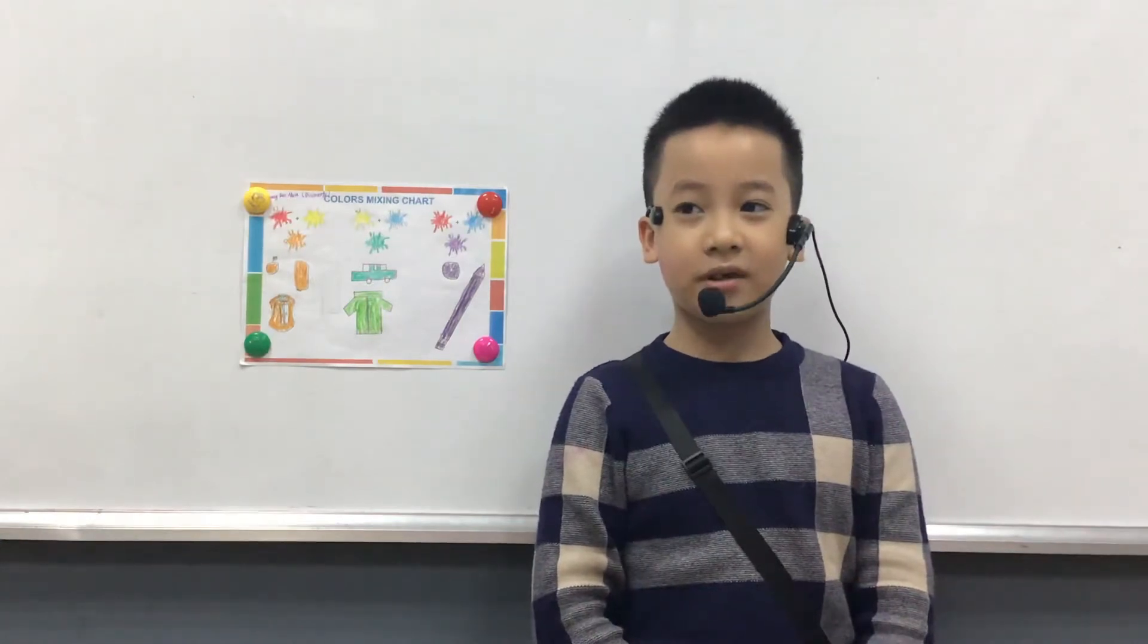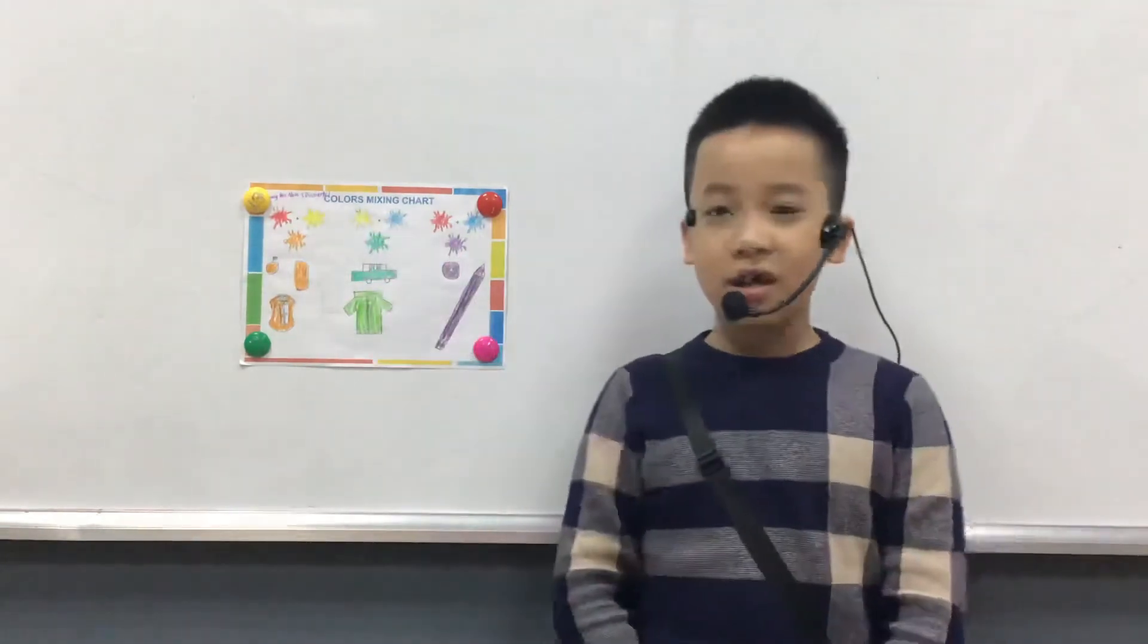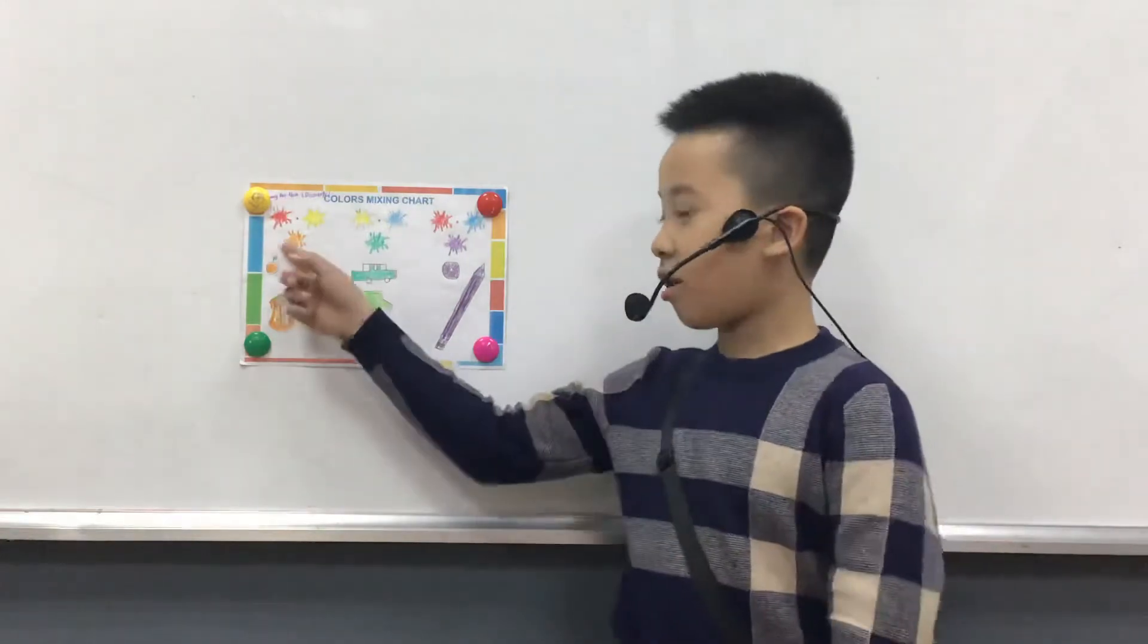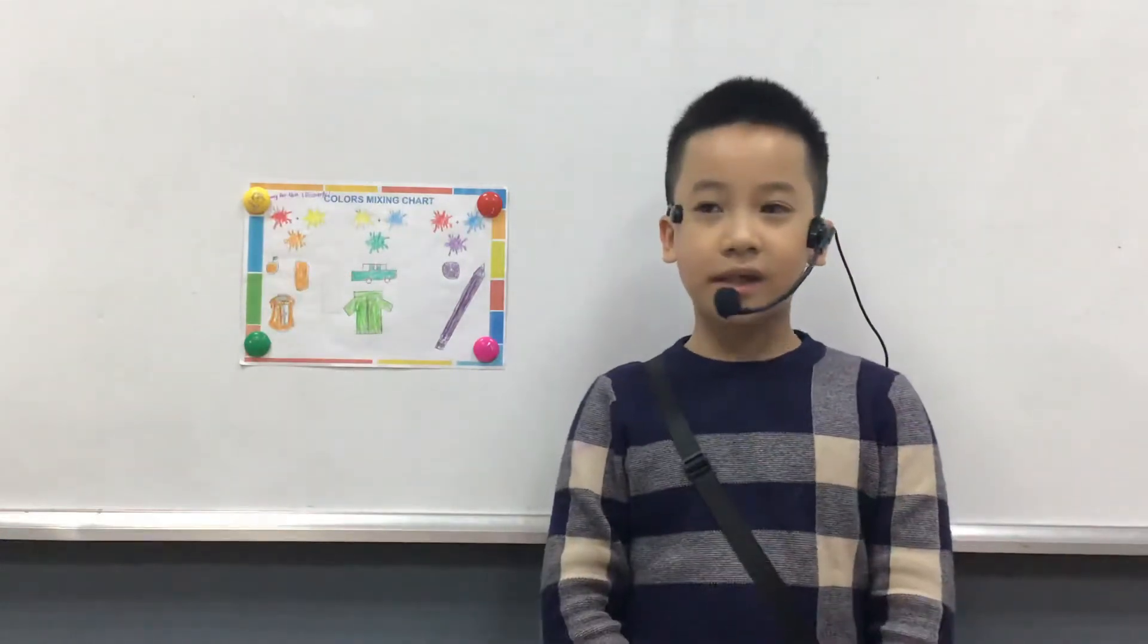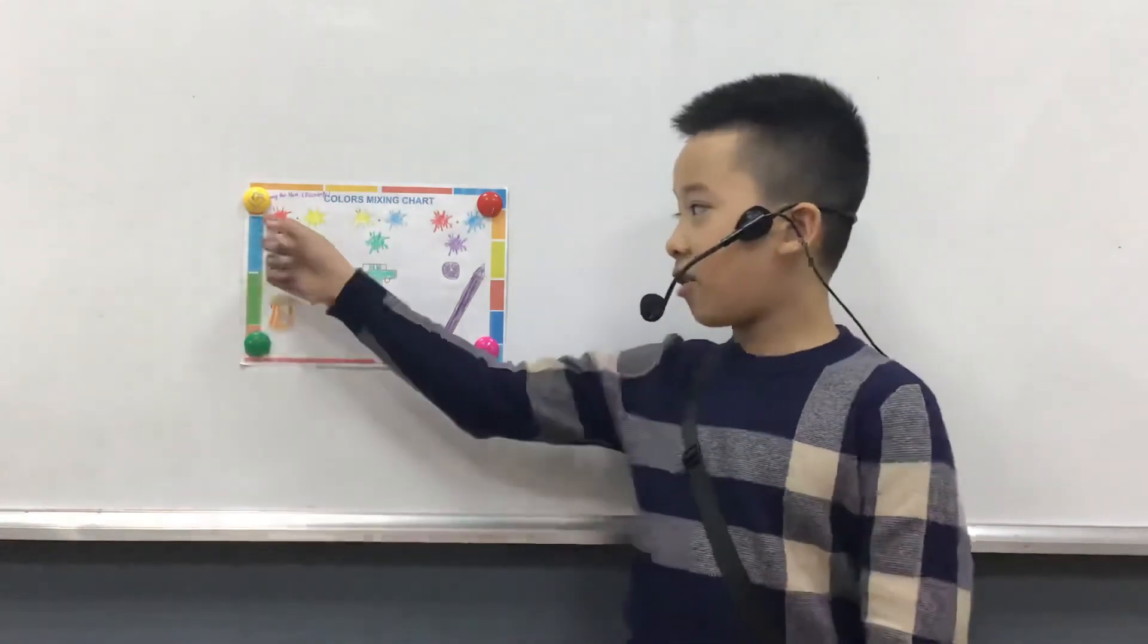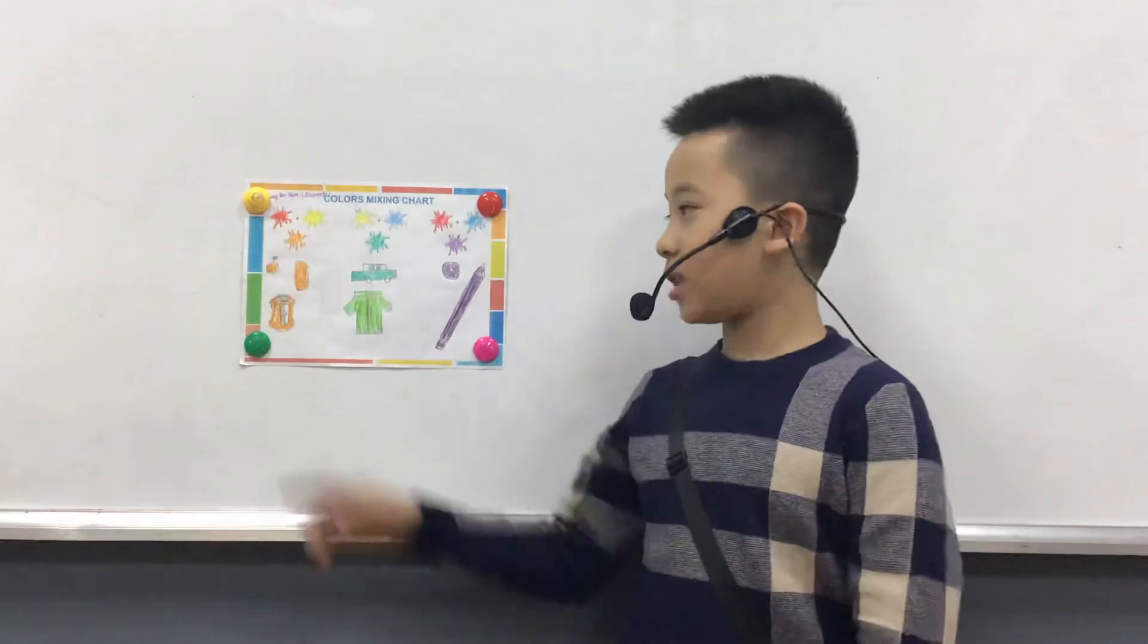Today I will show you about my color mixing chart. The first color is orange. This color is a secondary color. I mix red and yellow to get orange.